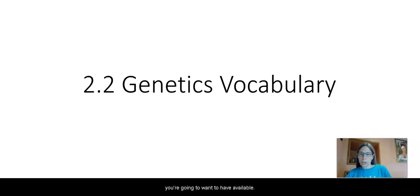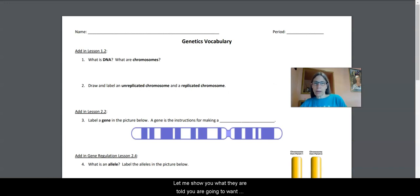There are a couple of sheets that you're going to want to have available. Let me show you what they are. So you are going to want to have available this genetics vocabulary worksheet that you should have gotten at the very beginning of genetics when we were working with planaria. This hopefully looks familiar to you.